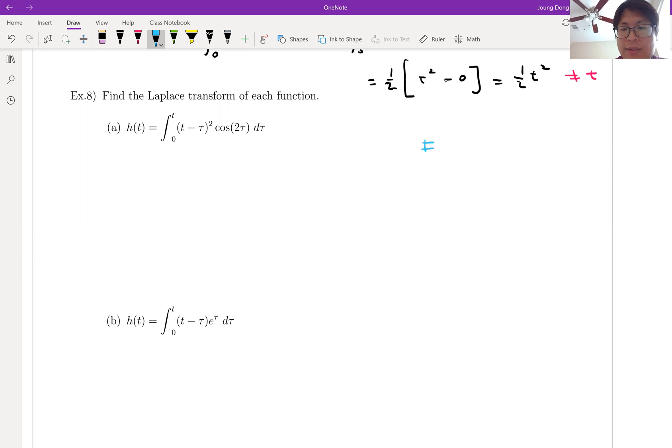The Laplace transform of the convolution integral is equal to f(s) times g(s), where f(s) is the Laplace transform of f and g(s) is equal to the Laplace transform of g. We're going to try to figure out which part is function f and which part is g. That's easy, look at that. We're not going to do any crazy calculation.